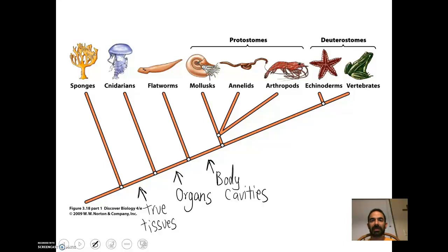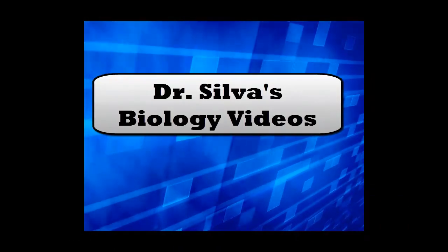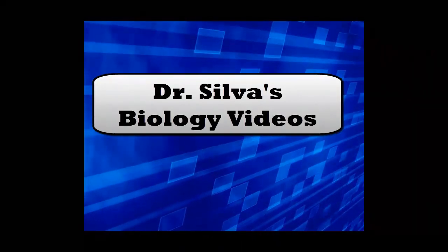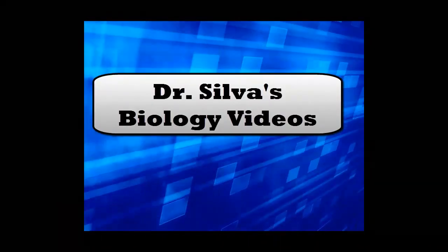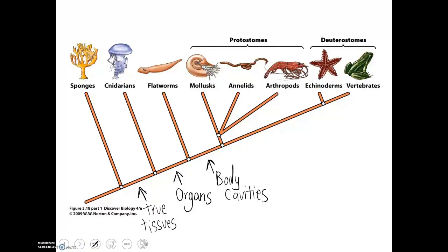In this final video on the diversity of life, we'll be talking about vertebrates. In the previous video, we talked about sponges, cnidarians, flatworms, and the protostomes, so the final groups of animals we'll be talking about are the deuterostomes.